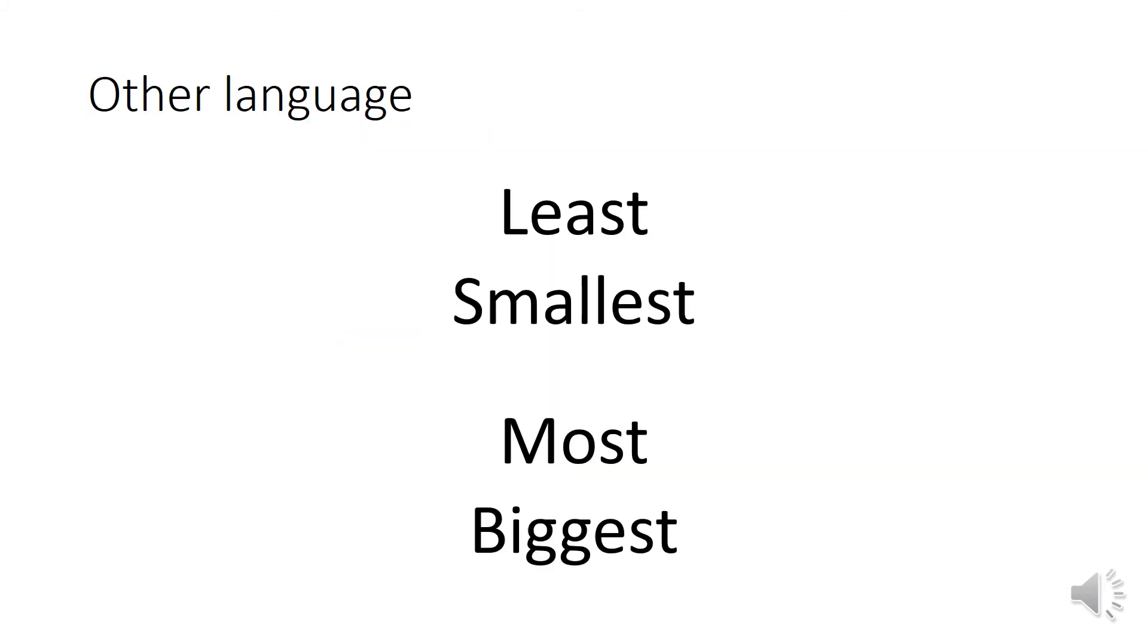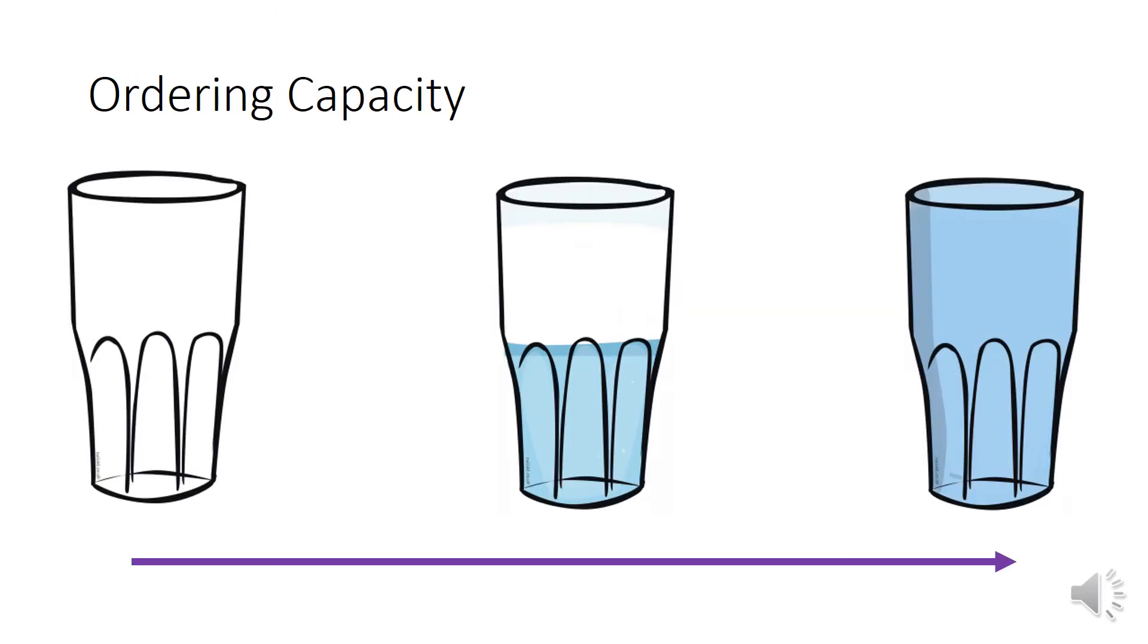We looked at that language yesterday, didn't we? Of least, smallest, most, and biggest to order the capacity of something. We looked at my glasses. I ordered them from the smallest or the least amount of liquid to the biggest or most amount of liquid.